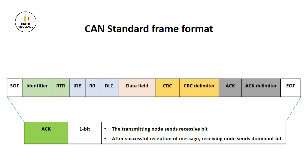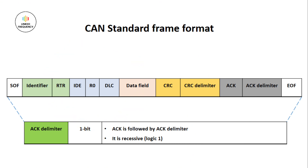ACK stands for Acknowledgement and is 1 bit. The transmitting node sends a recessive bit while transmitting. After successful reception at the receiver, the receiving node sends a dominant bit indicating acknowledgement. Immediately after ACK is the ACK Delimiter, which is 1 bit recessive. Once the data is received at the receiver end, it requires some time to send an acknowledgement to the transmitting node, hence the ACK Delimiter is used.